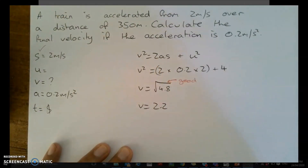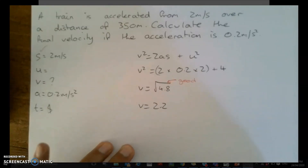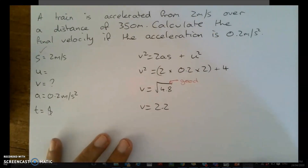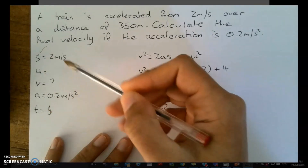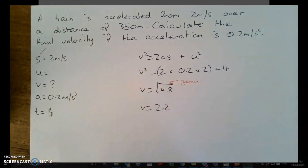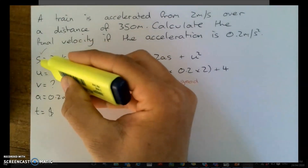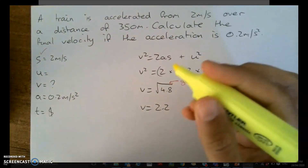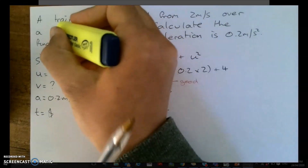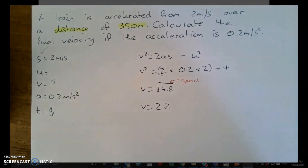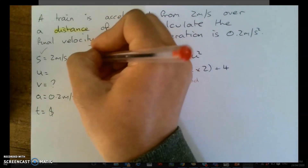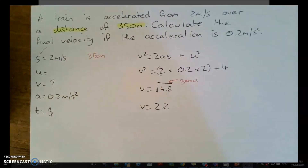Then I'd ask, okay, what have they done wrong, or what can they improve on? Some students would say they have got the values wrong. So I'd go through it and say, what does S actually stand for? Well, S is our displacement, or distance, but ideally the displacement. So here you'd spot in the question the distance is 350 metres, right here, 350 metres.